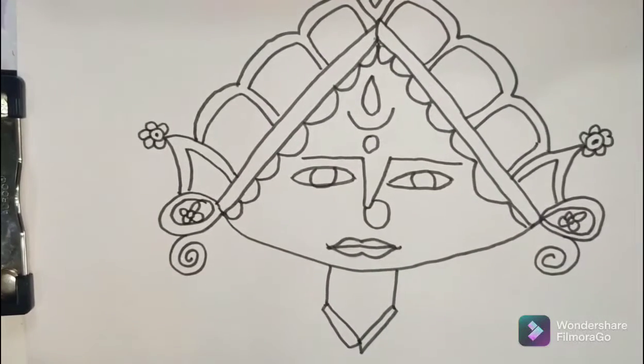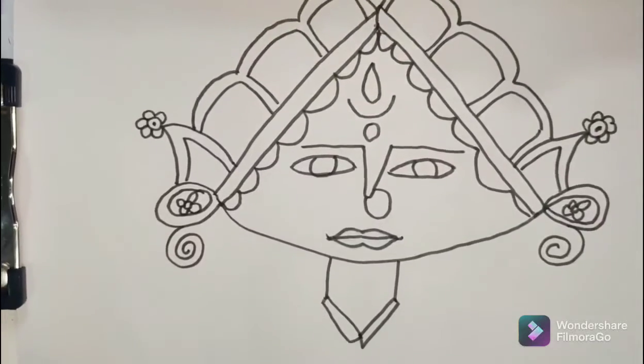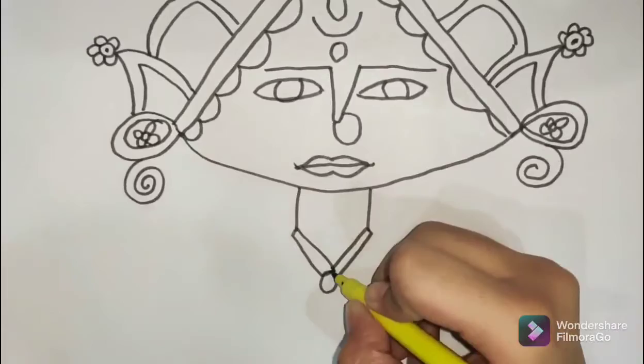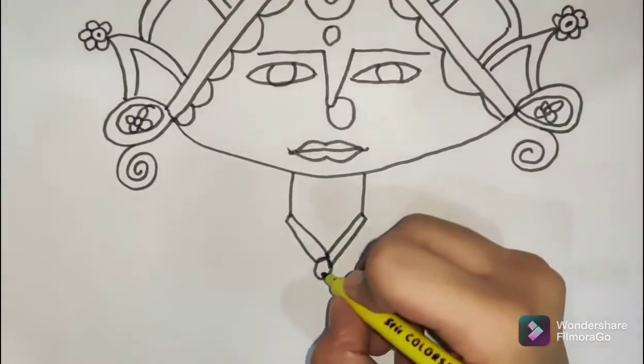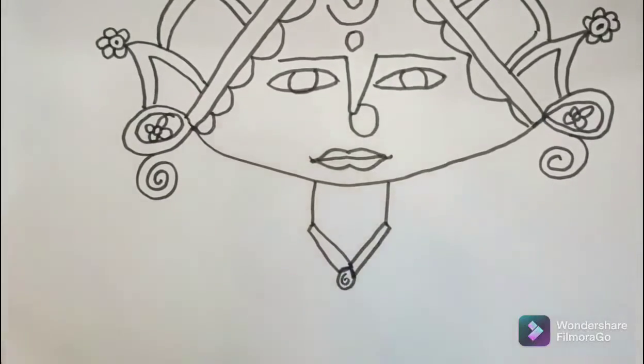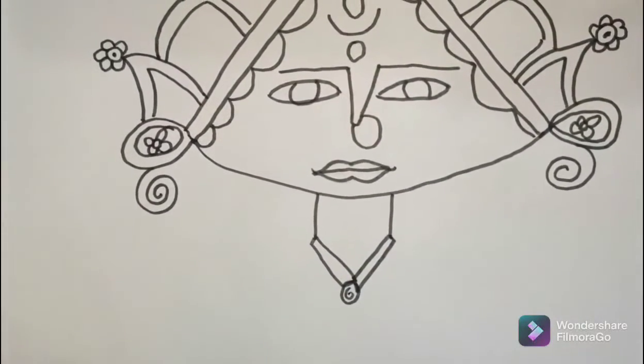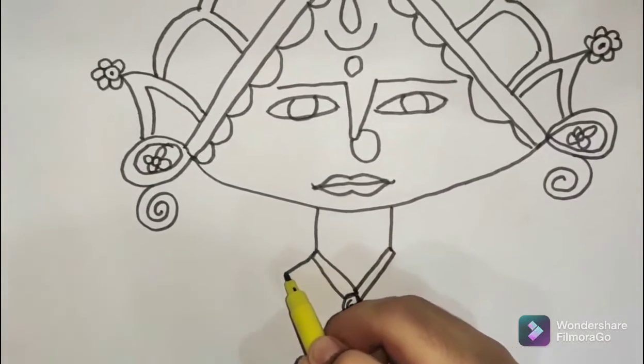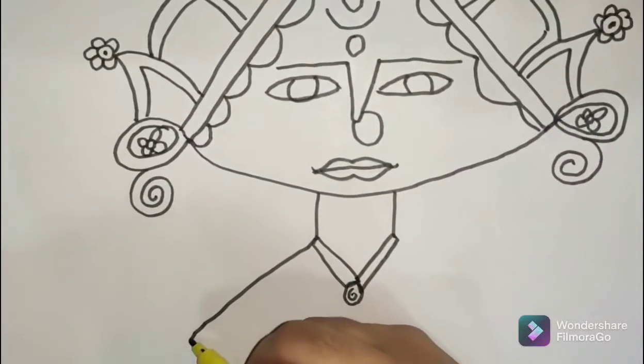We need to make a necklace. We are making her dress. Here on the dress, we need to make a little circle. If you have space in the circle, you can make even some decorations in the circle. Now we are going to make this shape.